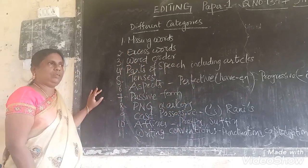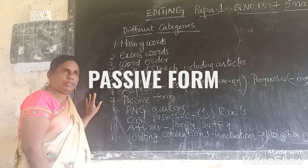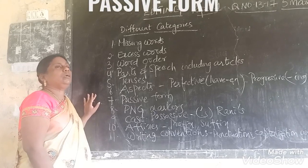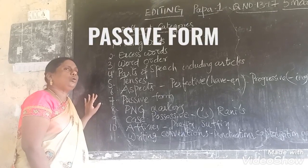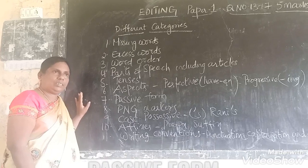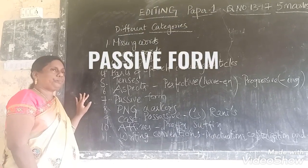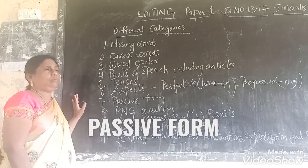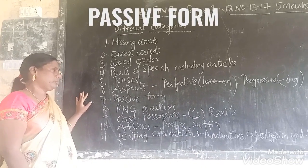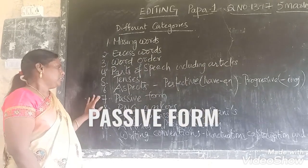Then passive form — you have to see whether the sentence or the passage is in passive form or not, and the sentence should also be in passive form accordingly. How to recognize whether the sentence is in passive form: in the passive form, the verb will always be in V3 form, and it will be followed by 'be' plus a preposition.